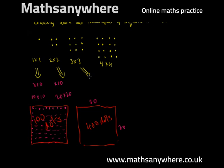3 times 10 is 30, so 30 times 30 would also give us a square number. 3 times 3 is 9, add on the two zeros, which is 900.